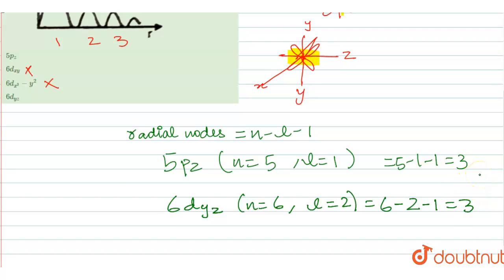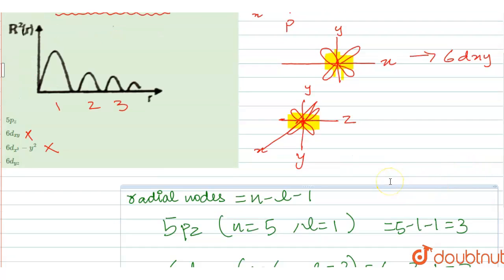So this is also three nodes. So the correct answer will be option one and option four. A and D are correct. Thank you.